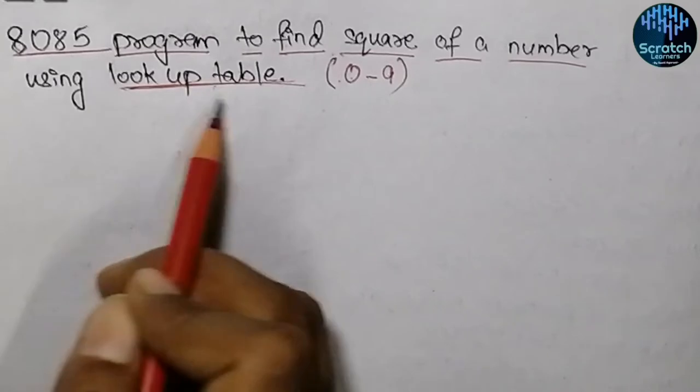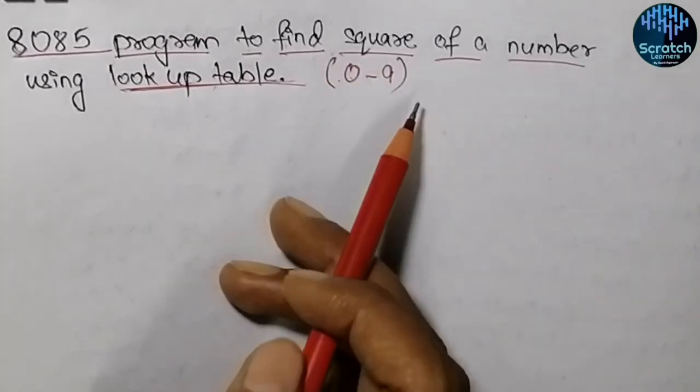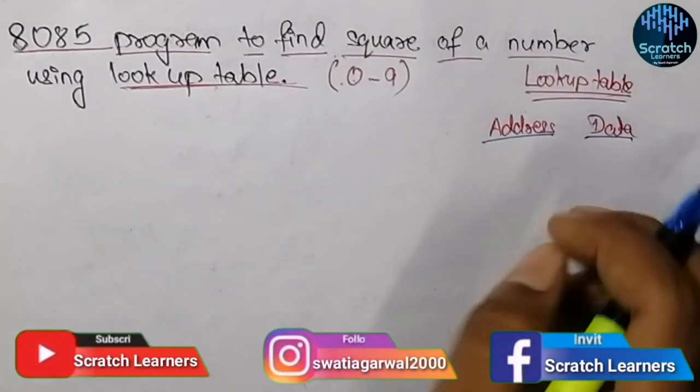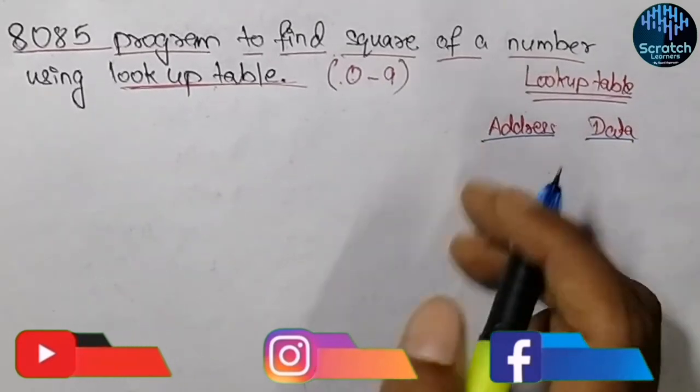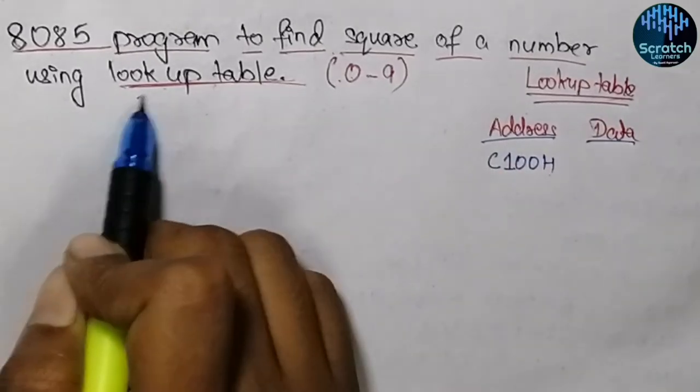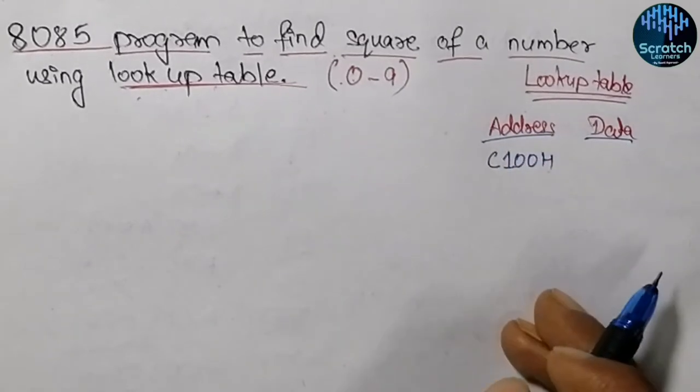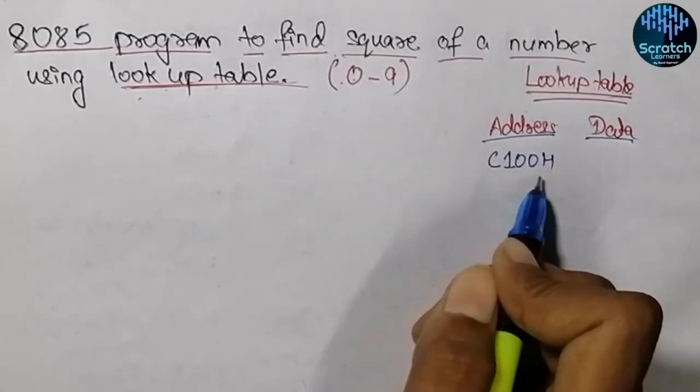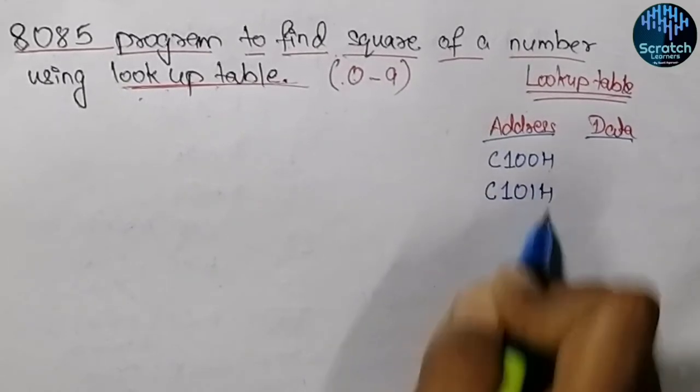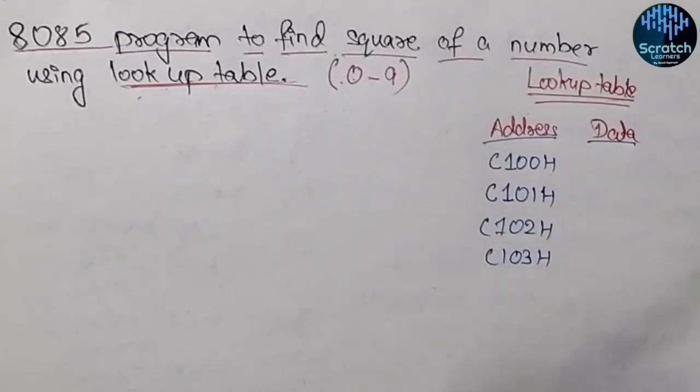In this lookup table, we will store the squared values of these integers. Let's say the starting address of the lookup table is C100H. As this is a tabular structure, we store values in sequential locations: C100H, C101H, C102H, C103H, and so on.